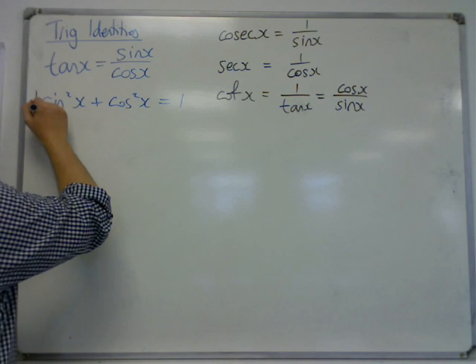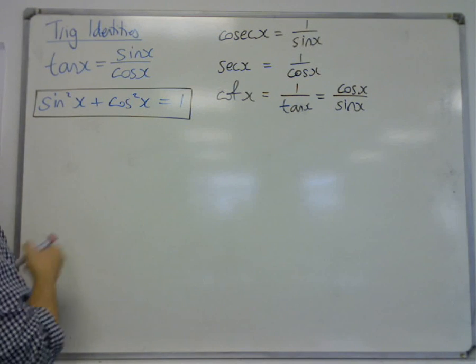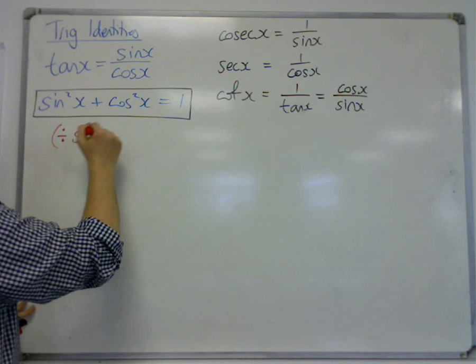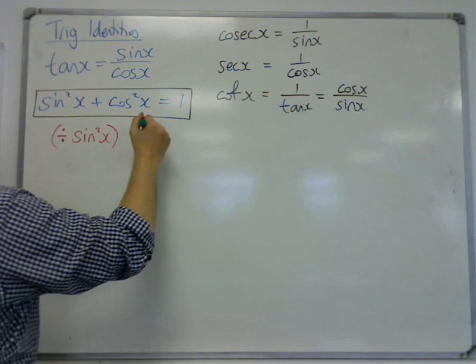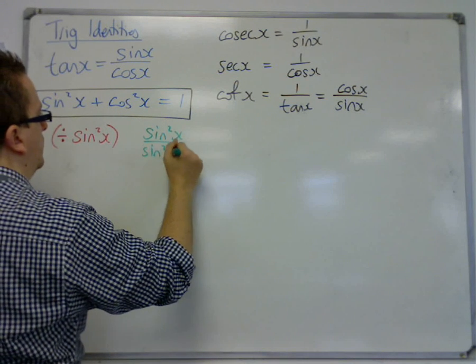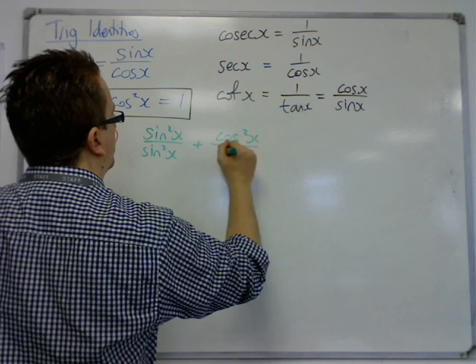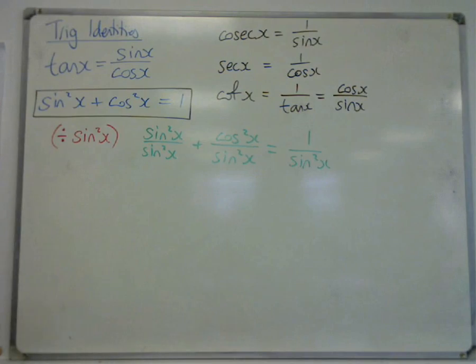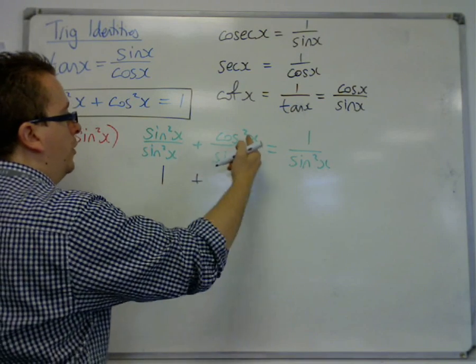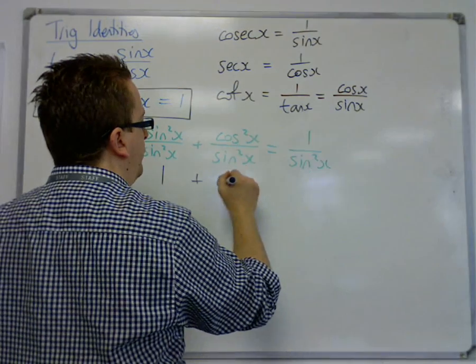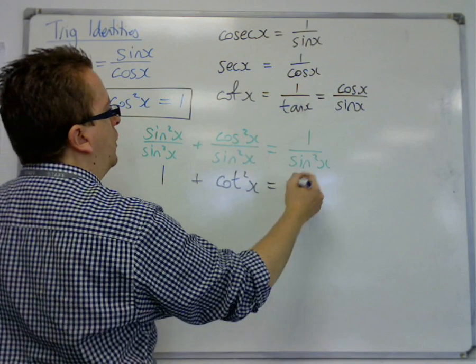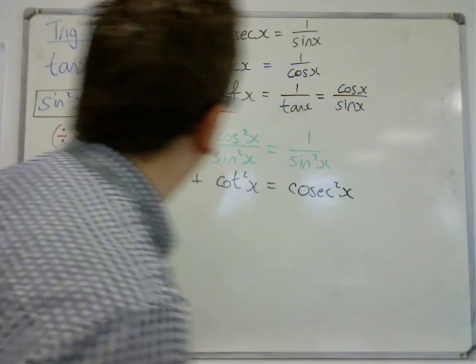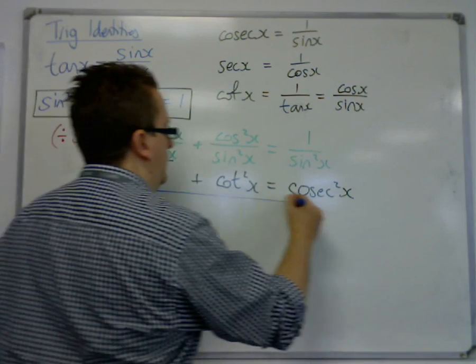So if we begin with this identity and we divide everything by sine squared, then I get sine squared over sine squared, cos squared over sine squared, plus cos squared over sine squared, equals 1 over sine squared. So sine squared over sine squared is 1, cos squared over sine squared is cot squared, from here, and 1 over sine squared would be cosec squared, so here is another identity that we need.